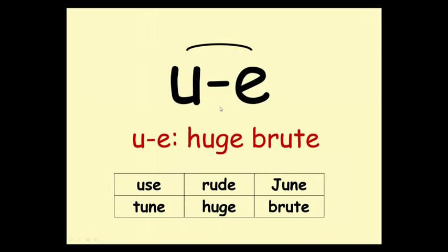This is the OO sound — OO split E. OO — huge, brute. Here are some words: use, rude, tune, tune, huge, brute.